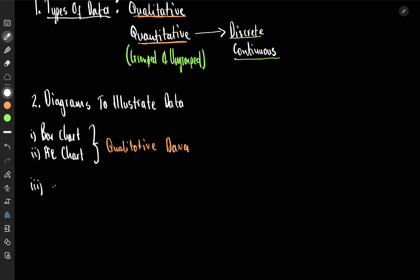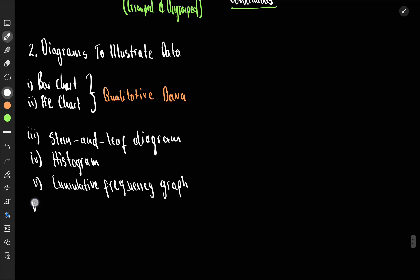Then the third one, Roman figure 3, is going to be your stem and leaf diagram. So you have a stem and leaf diagram. Then the fourth one is going to be your histogram. We'll say the histogram is going to be my fourth. Then my fifth is going to be my cumulative frequency graph or cumulative frequency curve. Sometimes or most of the times you hear it being called cumulative frequency curve. Then here on our sixth, we have the box and whisker plots.